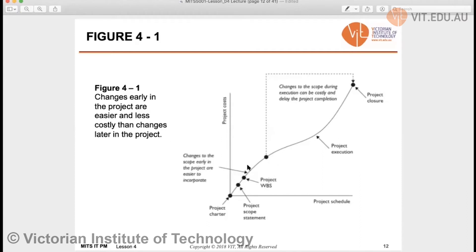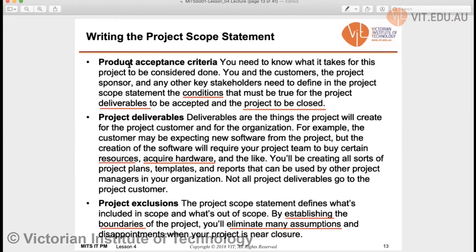If you make changes early it should be cost effective, because you are not going to close the project yet. If you have to change things late, you have to redo a lot of work before you can close the project. In summary, it is better that you fix your errors in the initial stage of the project. After the product scope statement, we need product acceptance criteria.